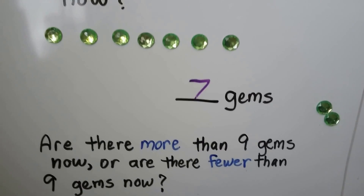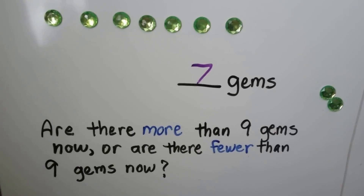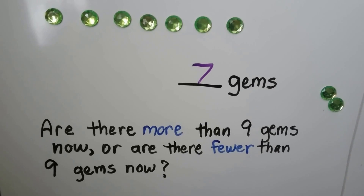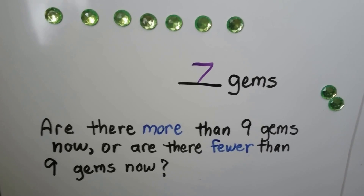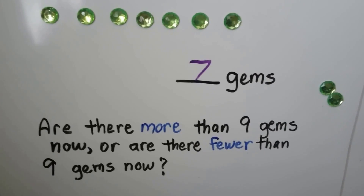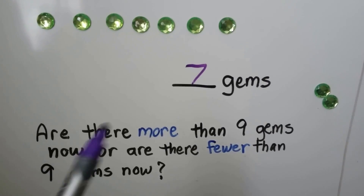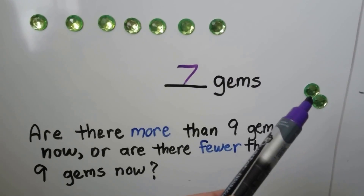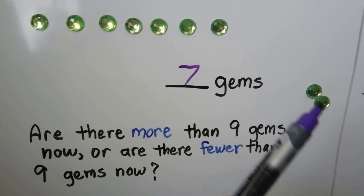Are there more than nine gems now? No, seven is not more than nine. Or are there fewer than nine gems now? Yes, seven is fewer than nine because we took two away.